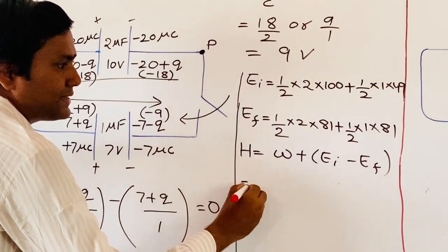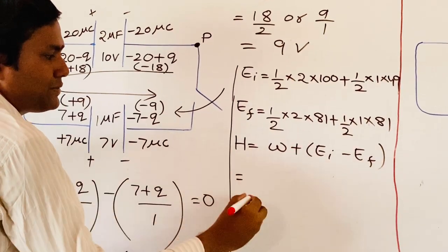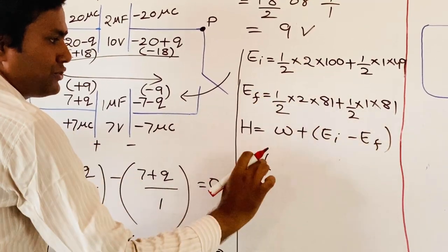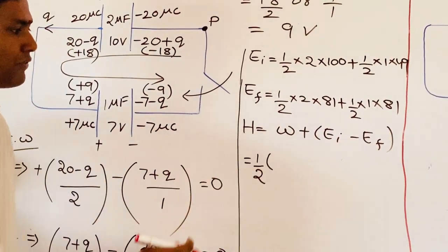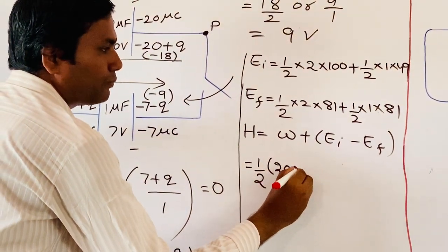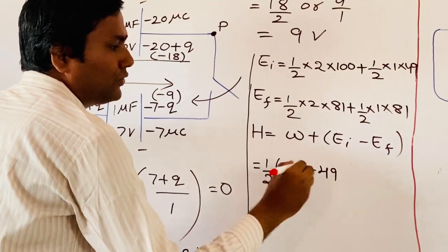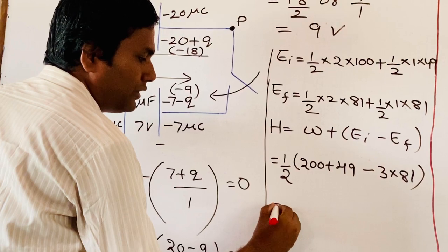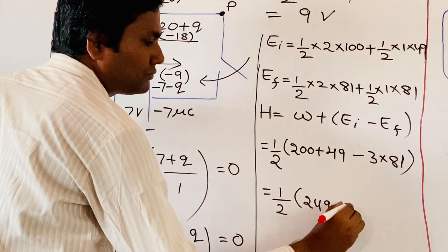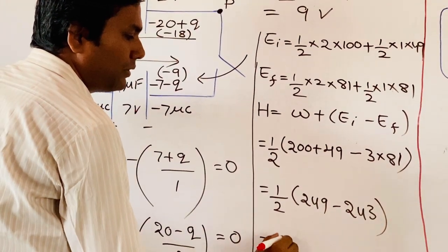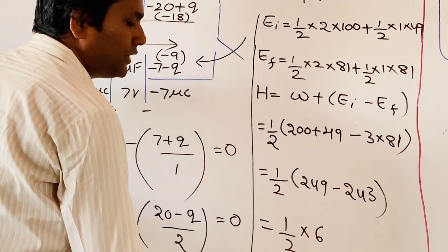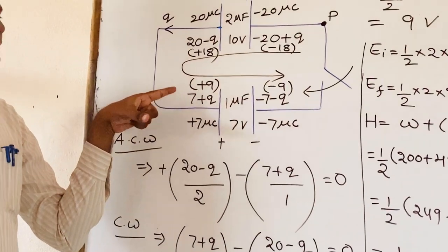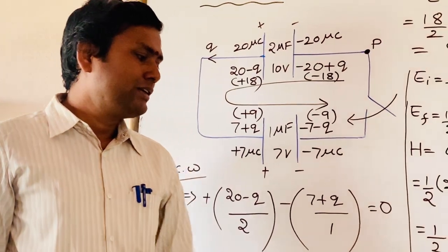The heat energy formula is H = W + EI − EF. Since W = 0, substituting: H = (1/2)[(200 + 49) − (3 × 81)] = (1/2)[249 − 243] = (1/2)(6) = 3 microjoules. After closing the switch, during the transfer of charge, the total amount of heat energy generated in this circuit is 3 microjoules.